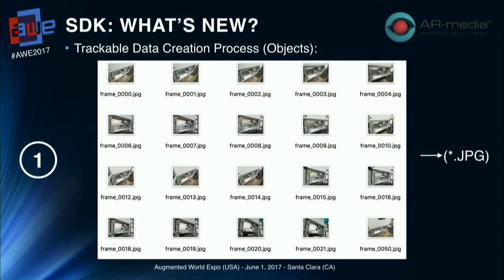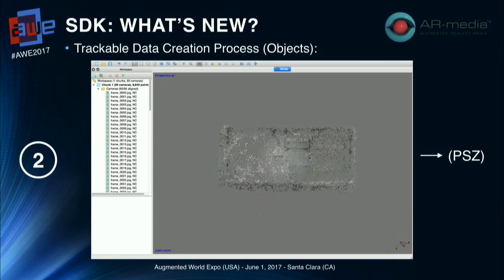The other new feature added recently was a simpler workflow to create the trackable data. You basically take some pictures of the object you want to track from several vantage points, then upload those pictures — in this case using a third-party component, Photoscan. Based on the pictures you've taken, you get a point cloud that you can handle, simplify, and manage as you want.